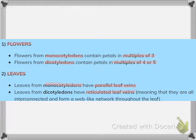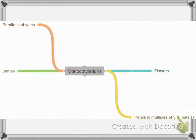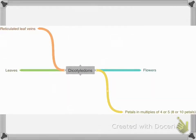Diagram versions illustrate these features. For monocotyledons: flowers have petals in multiples of three and leaves have parallel veins. For dicotyledons: flowers have petals in multiples of four or five and leaves have reticulated veins.